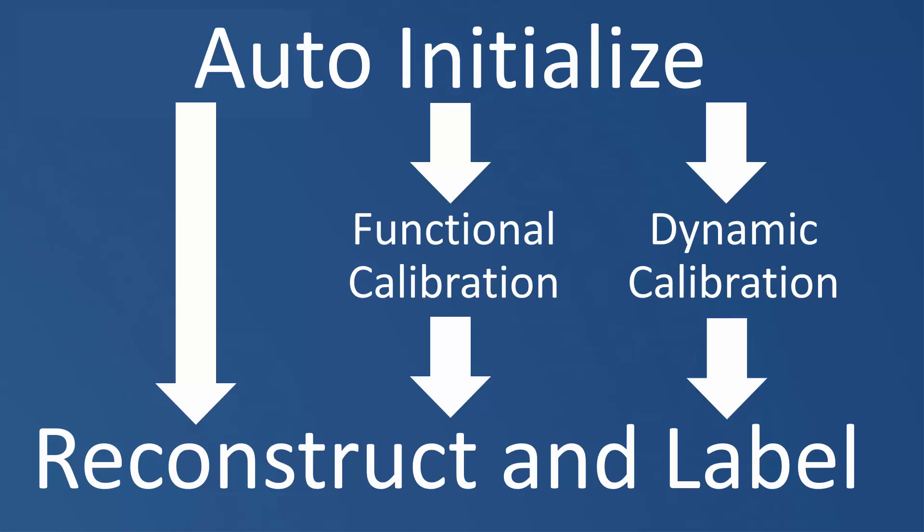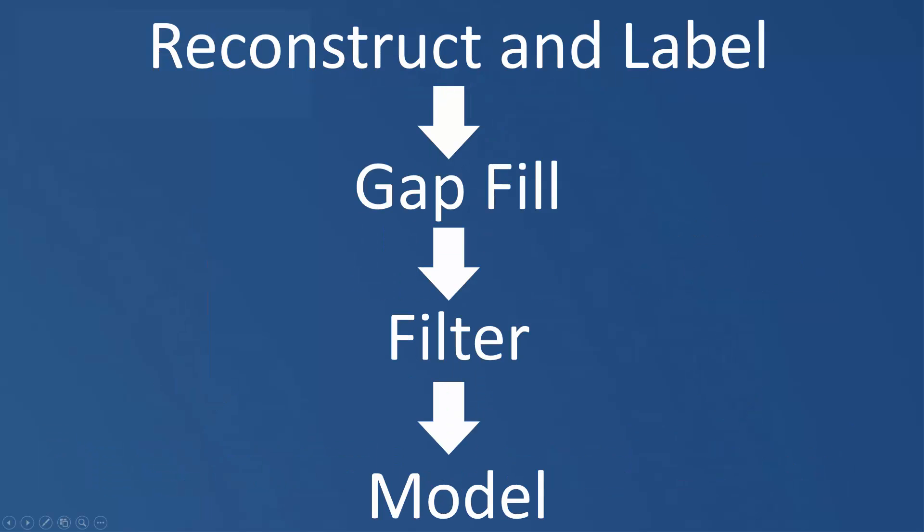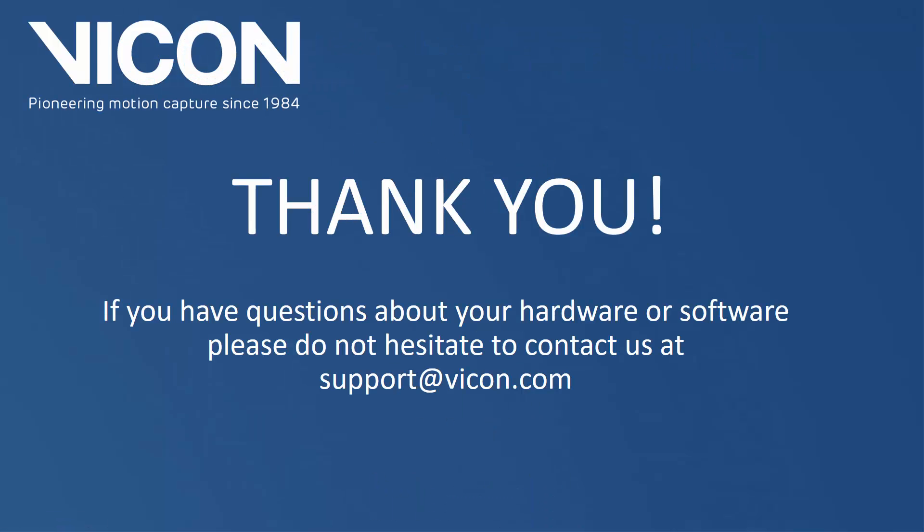To summarize this video, I have shown you the three methods you can use to auto-label your dynamic trials. Once you have finished auto-labeling your trials, you will still need to process your data. This may include gap filling, filtering, and modeling your data. Thank you for watching this video. If you have any questions, please don't hesitate to contact us at support@vicon.com.